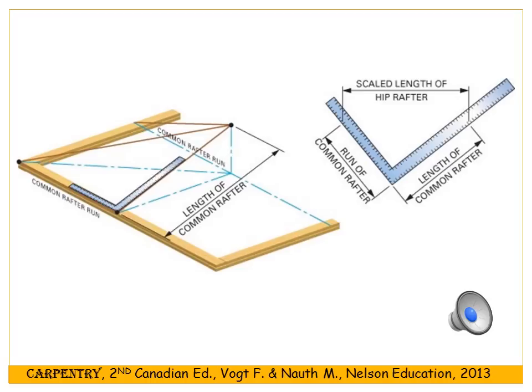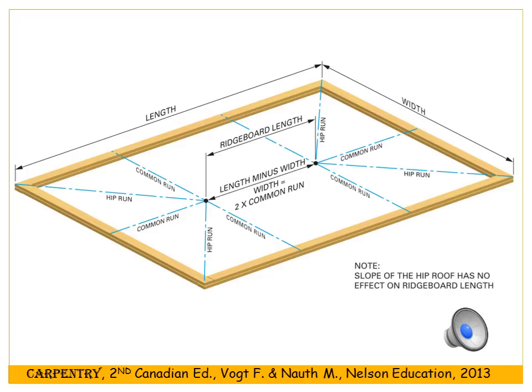This diagram shows the length and width of the building and how to calculate the length of the ridge board. At the end of each ridge board you're going to have a common rafter, so the ridge board is shortened by the common run on either end. In a hip roof, it's going to be the length of the building minus two times the common run, which equals the length of the building minus the width of the building.